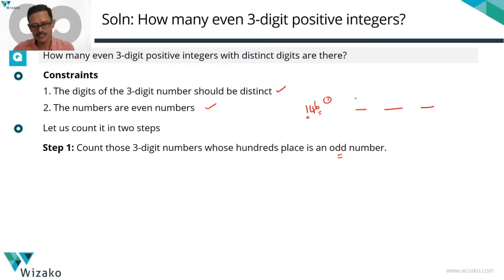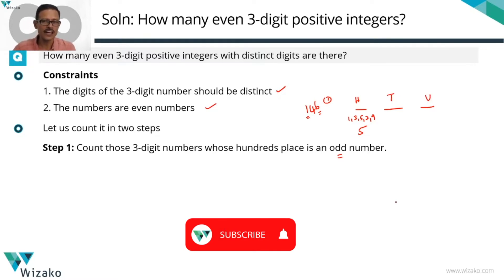The hundreds place is an odd number. So what all values can I take? It can take a 1, 3, 5, 7, and 9. So there are five possibilities for the hundreds place. We'll come to the tens place in a while. Keep it on hold. Let's go to the units place. The given number is an even number, so the unit digit has to be even for the number to be an even number. What all possible values exist? 2, 4, 6, 8, and it can also be a 0. 0 is an even number. So how many possible values exist for the units place? We have five possible values for it.